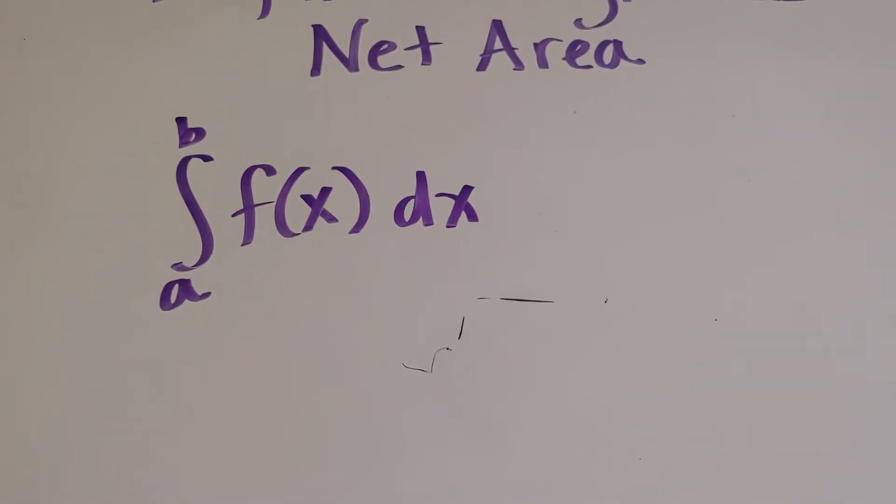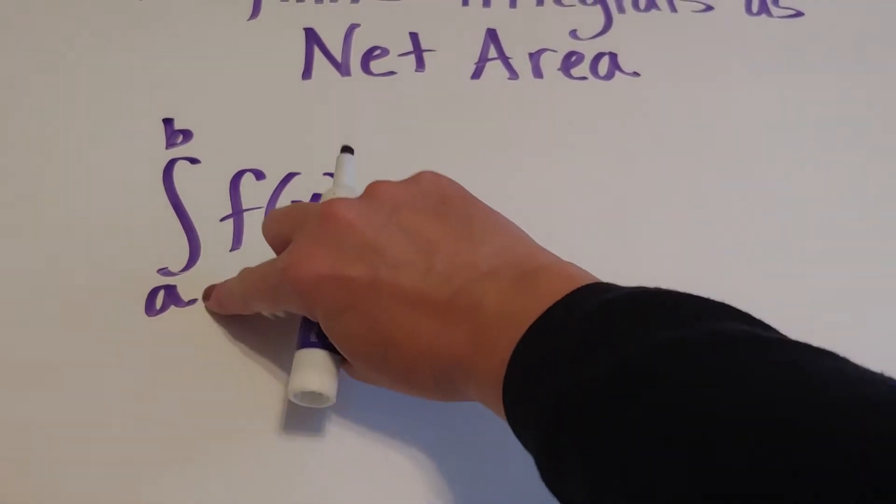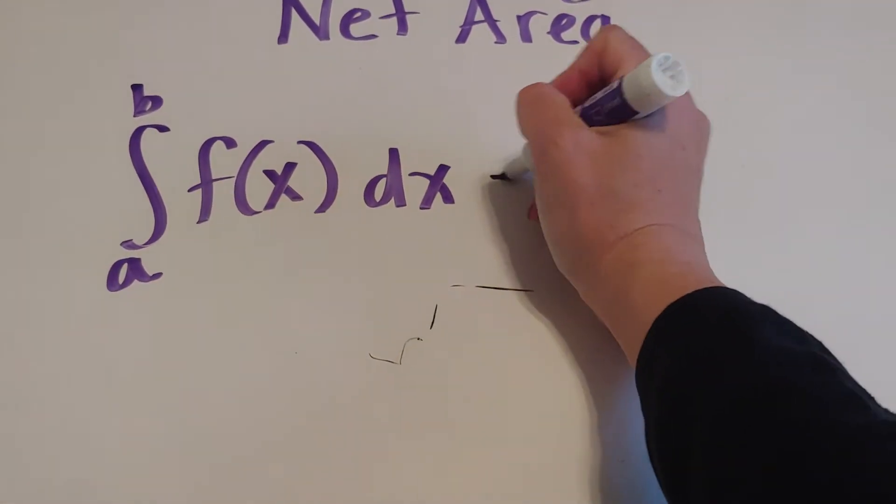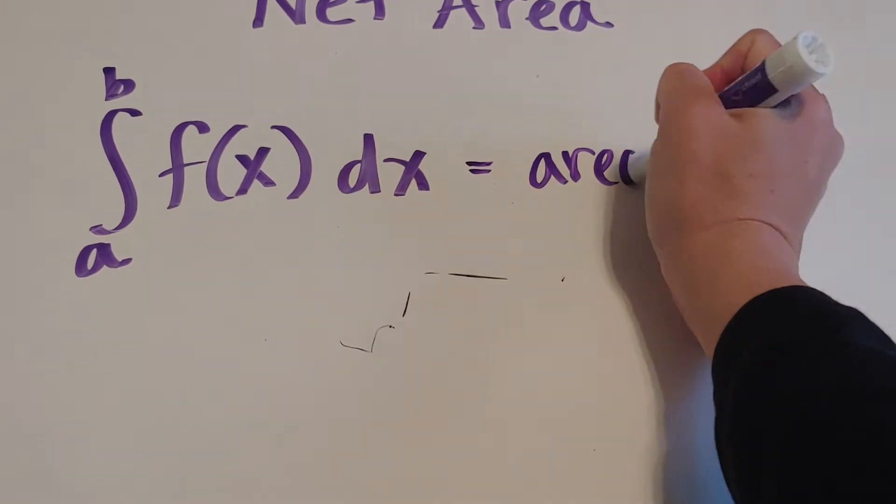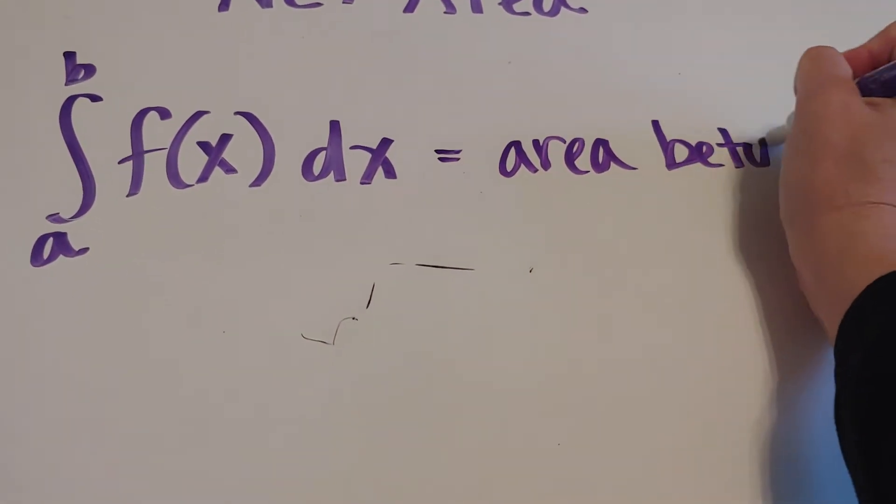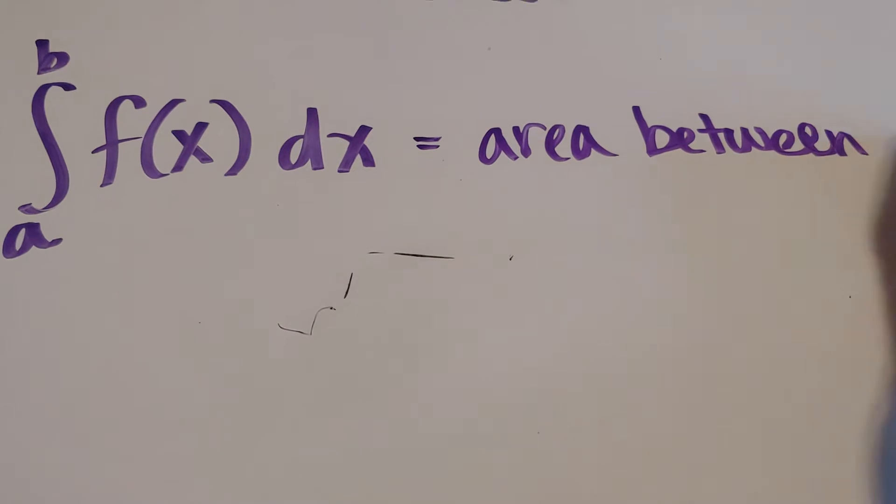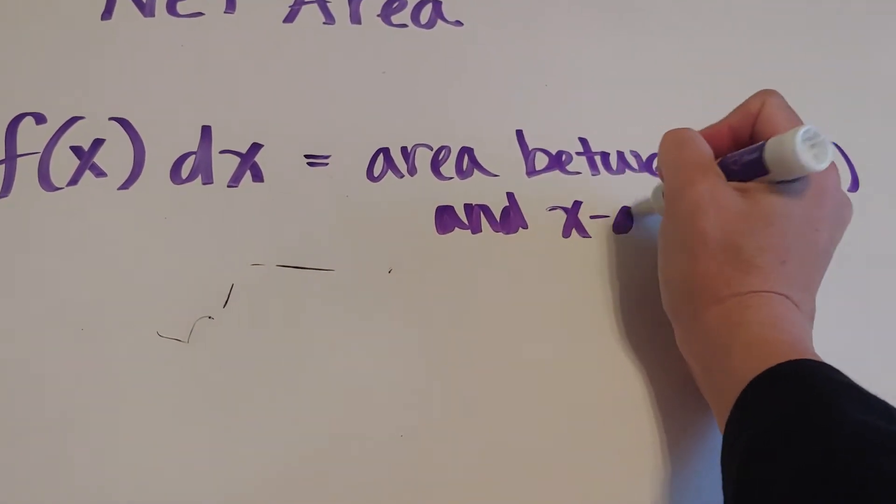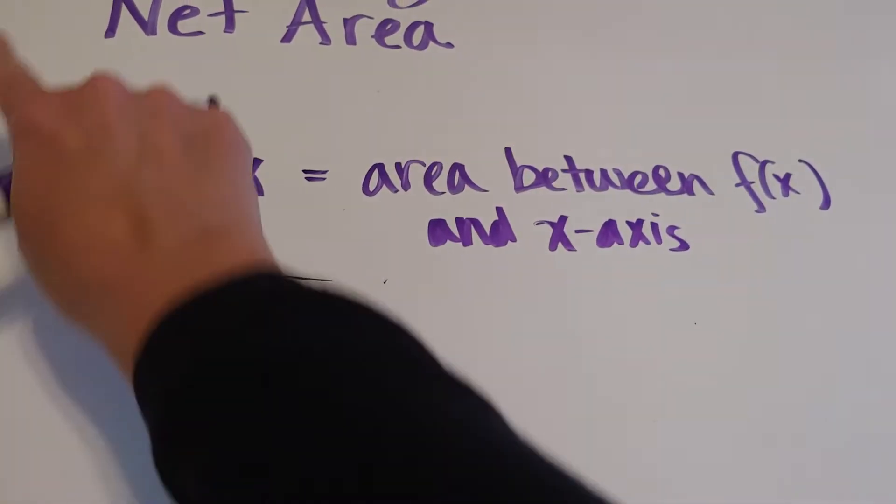This is called a definite integral. It's got numbers on the ends, and what these numbers correspond to is that this finds the area between f(x) and the x-axis from a to b.